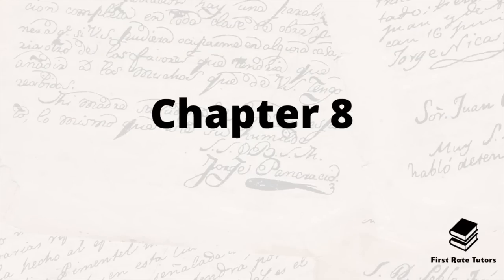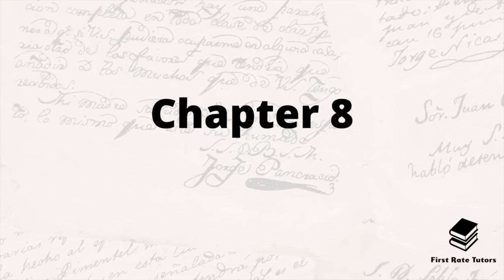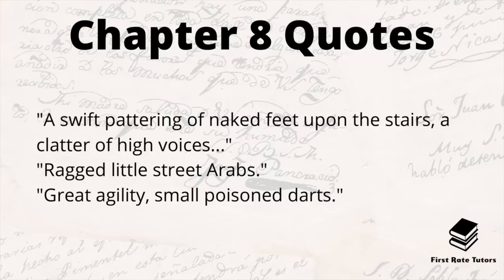Chapter eight, The Baker Street Irregulars, sees Holmes and Watson retracing their steps and picking up the trail again, finding it leads to a riverside landing stage where boats are available for hire. Holmes tricks the wife of one of the boat owners into revealing that a wooden-legged man has been associating with her husband Mordecai Smith and that they are on a steamboat called the Aurora. Back at Baker Street they read a newspaper praising Jones's handling of the case, and the Baker Street Irregulars — a noisy group of street urchins employed by Holmes — arrive and are ordered to find the Aurora. Holmes reveals he knows Jonathan Small's companion is an aborigine from the Andaman Islands. Key quotes: 'a swift pattering of naked feet upon the stairs, a clatter of high voices'; described as 'rugged little street Arabs'; and 'great agility, small poison darts.'